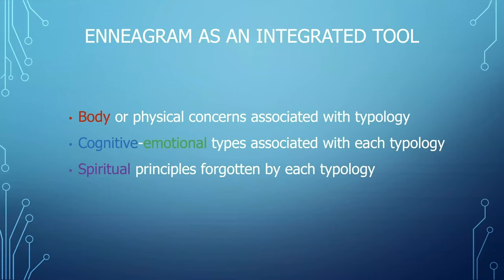The Enneagram is an integrated tool. Because we have this aspect of looking at the somatic experience of type, we can take a look at physical concerns associated with each type — anything from a disease in the body to a visceral experience, to trauma, to an embodiment of practice. It has a cognitive-emotional experience associated with each type. Each type has a thought pattern and an emotional feeling pattern. And there are spiritual principles associated with each typology — essential qualities of consciousness linked to each type.